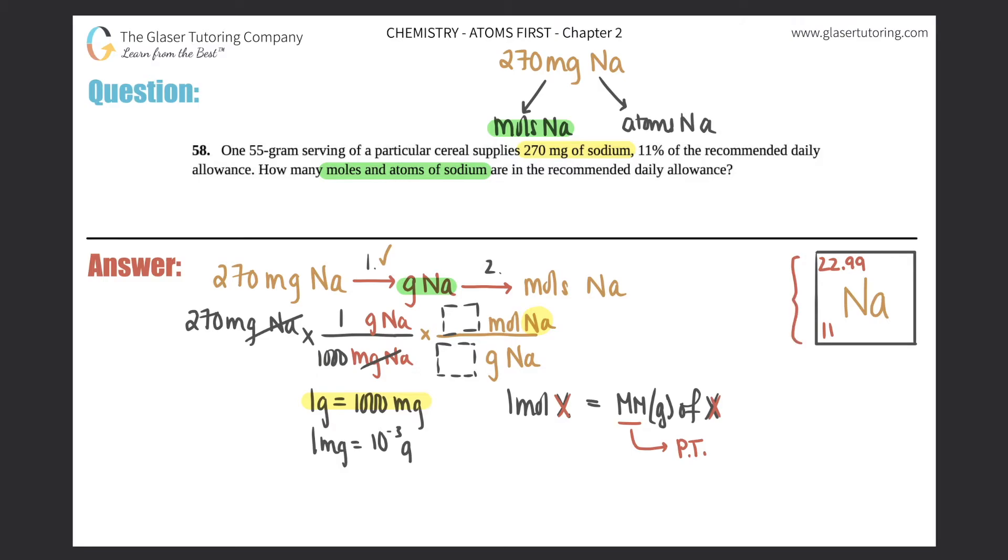Now, when you're searching for the mass, just know that it's always the higher number. So it's not the 11. You'll use the 22.99. So in this conversion, one mole of anything, so one mole of sodium equals the 22.99 grams of sodium.